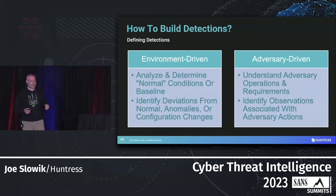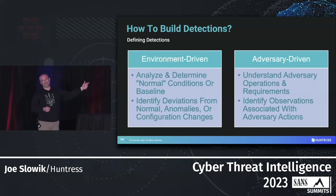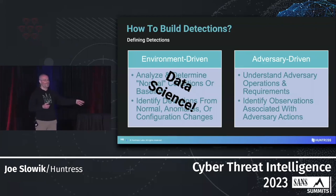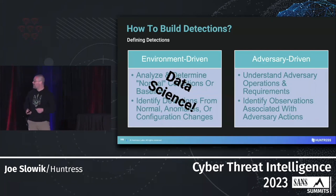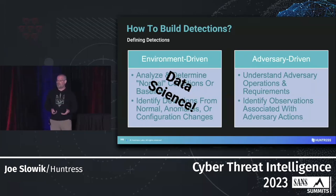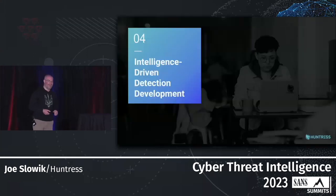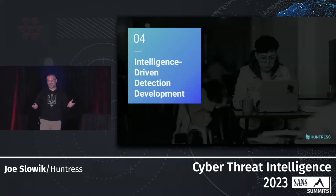We can split detectors into environment-driven — show me normal and what deviates from baseline, which is data science territory — and adversary-driven mechanisms, where we understand adversary operations and identify observations associated with adversary actions to fuel our detector development process. That gets us into the realm of threat intelligence deliverables that can reasonably have value for frontline operators. So how do we fuse intelligence and detections together effectively in less than 30 minutes of talking time?